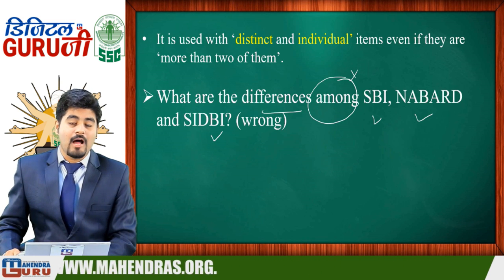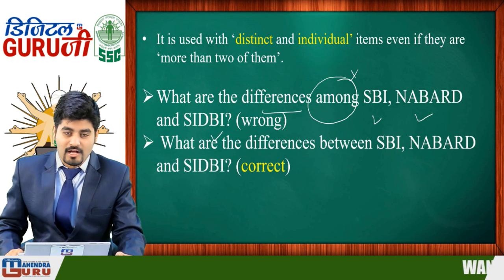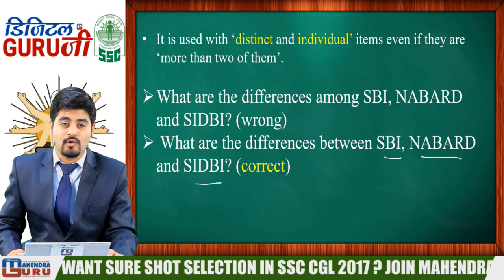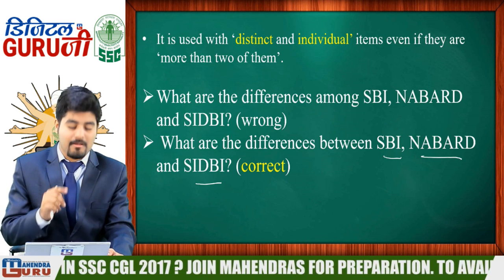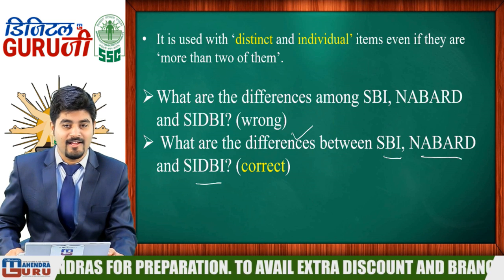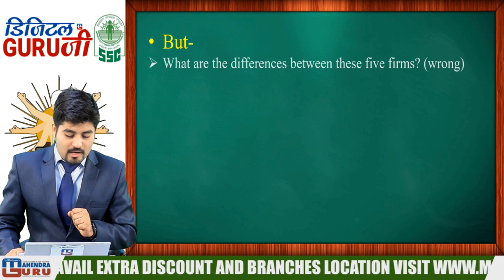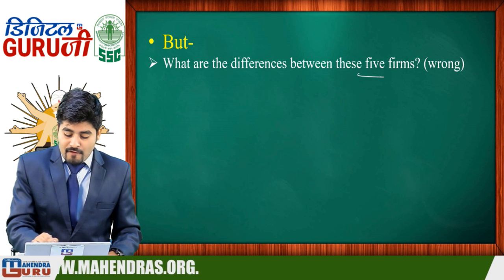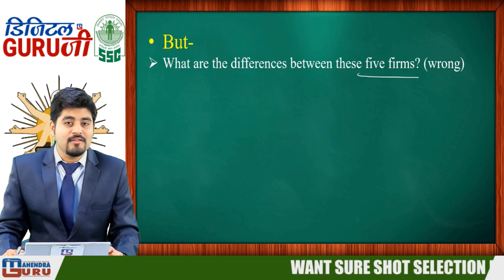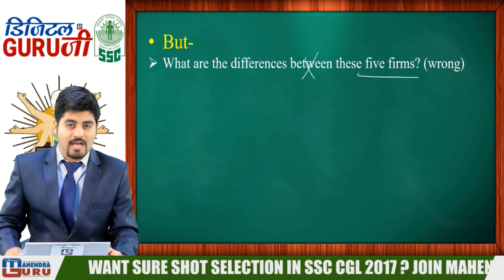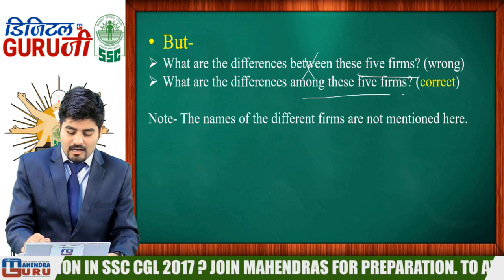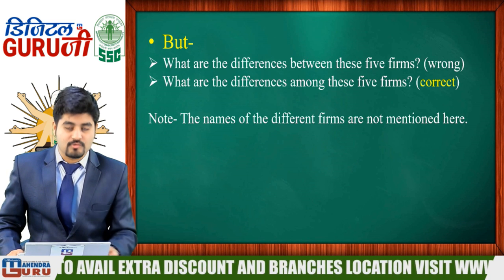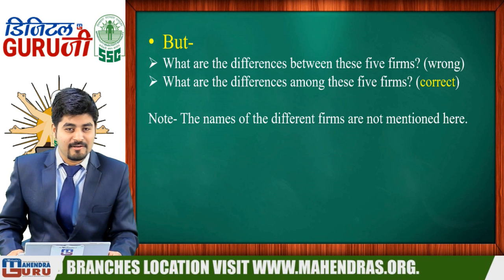So the condition is: if names are given for distinct individual items, use 'between.' But if names are not given — for example, 'What are the differences between these five funds?' — here the names of the five funds are not mentioned individually, so 'between' would be wrong. In that case, the general condition applies and we use 'among.' The key rule: if distinct names are mentioned, use 'between'; if not mentioned, use 'among.'